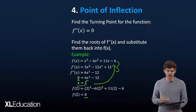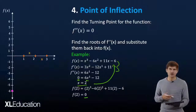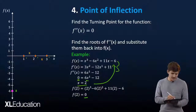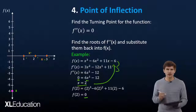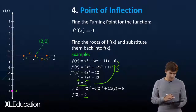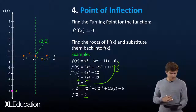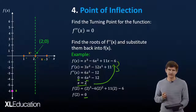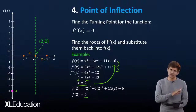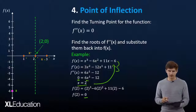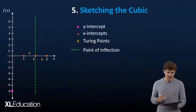Here's a visual of what we've derived so far: we have our y-intercept down here, our three x-intercepts along the curve, our two turning points, and now the point of inflection sits right there. I've added a dotted line to signify the change of gradient from one direction to the other.